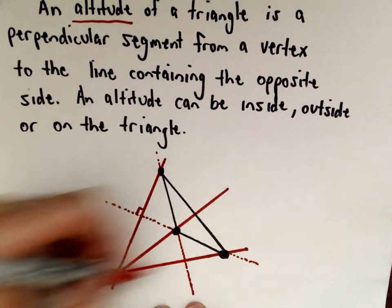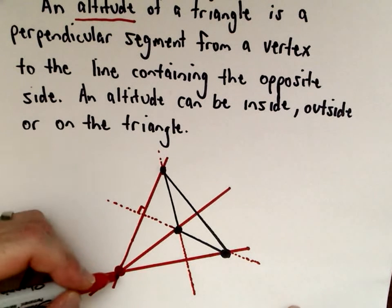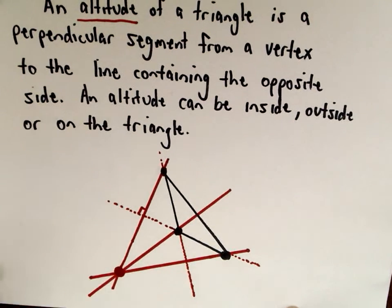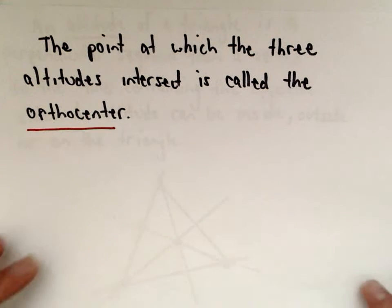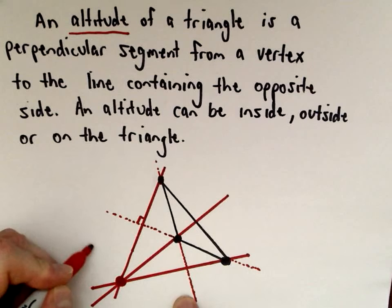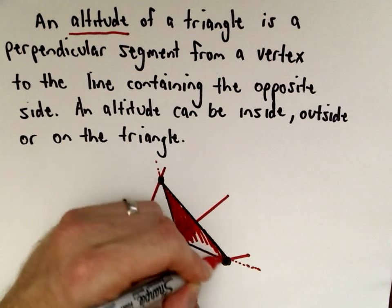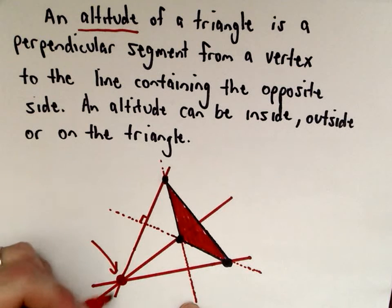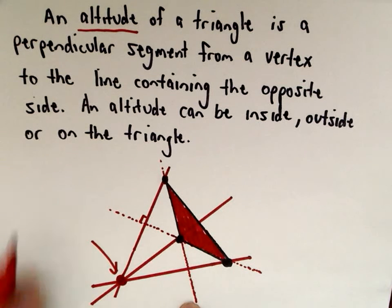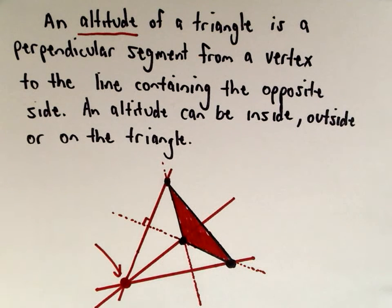When you draw these three altitudes, no matter what, it turns out that those three lines are going to intersect at a common point, and that common point is what's known as the orthocenter. Notice in this case my orthocenter is down here while my original triangle was up here, so the orthocenter does not have to be inside the triangle at all — it can be outside, inside, or on the sides.